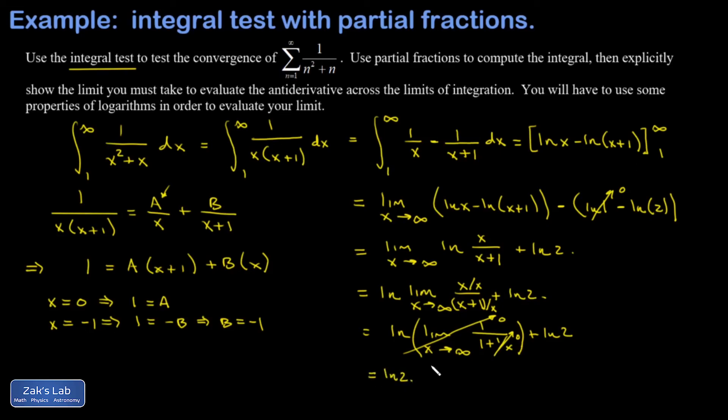Now the integral test says if I perform this integral and I get a finite number out of it, then it shows the convergence of the series. So the sum of one over n squared plus n converges and we're done.